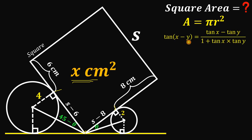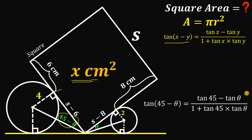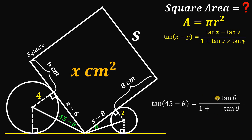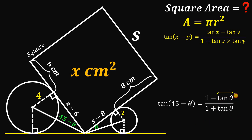We will use the tangent subtraction identity: tan(x − y) = (tan x − tan y) / (1 + tan x · tan y). Applying this to tan(45° − θ): since tan 45° = 1, the right-hand side simplifies to (1 − tan θ) / (1 + tan θ). From the small right triangle, tan θ = opposite/adjacent = 2 / (s − 8), so we substitute tan θ = 2/(s − 8).